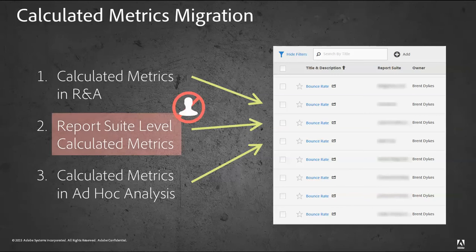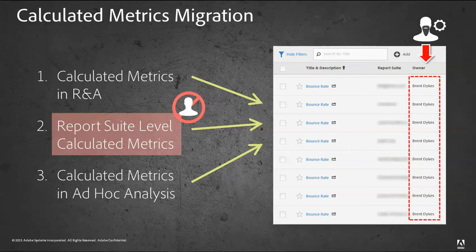The other thing you'll notice is that because the report suite level calculated metrics had no owner essentially, we've assigned the owner to an admin user. That admin user is typically, as indicated by the beard, the oldest admin user within your company. Any admin user can actually edit any of the global metrics or any of the metrics. It's not just limited to that person, but every calculated metric needed to have an owner, and so we went with the oldest admin user in your company login.